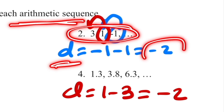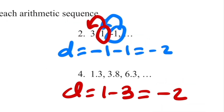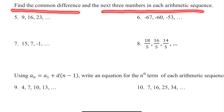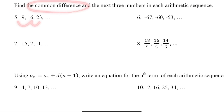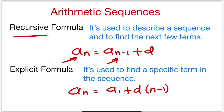Regardless of whatever values you use, if this is an arithmetic sequence, the d value has to always be the same constant value. Let's move on — find the common difference and the next three numbers in each arithmetic sequence.